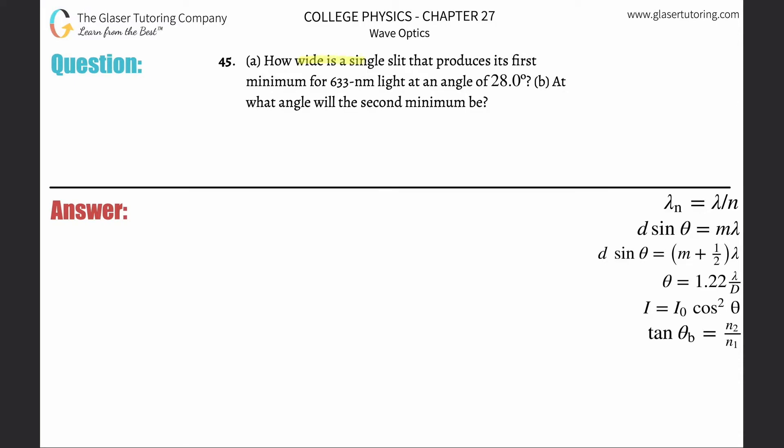Number 45, how wide is a single slit that produces its first minimum for 633 nanometer light at an angle of 28 degrees?